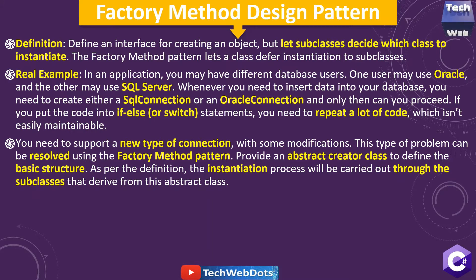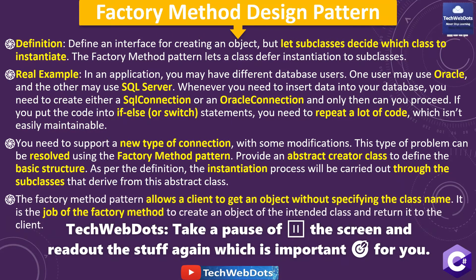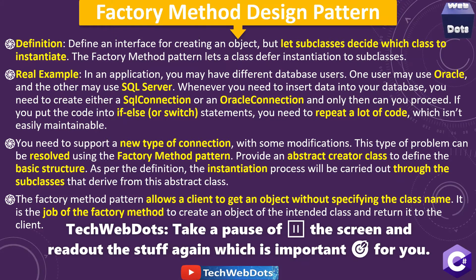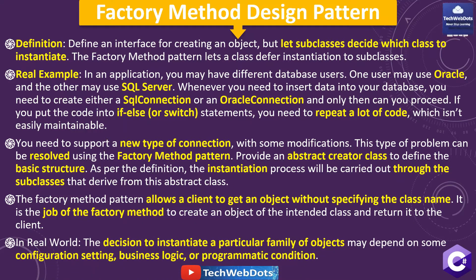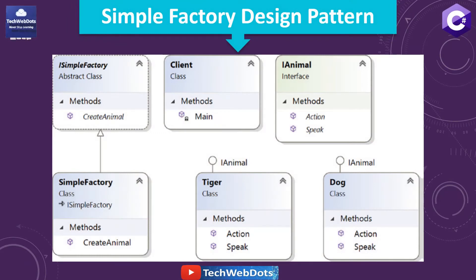You need to support a new type of connection with some modifications, and this type of problem can be easily resolved with the help of factory method pattern by providing an abstract creator class to define the basic structure. The instantiation process will be carried out through subclasses that derive from this abstract class. The factory method pattern allows a client to get the object without specifying the class name — the decision to instantiate may depend on configuration settings, business logic, or programmatic conditions.